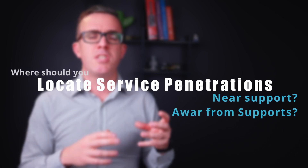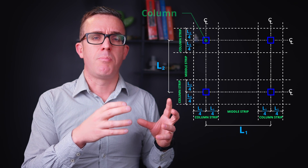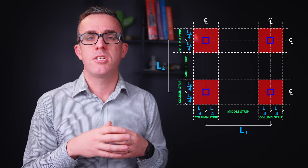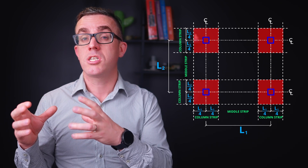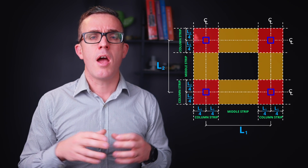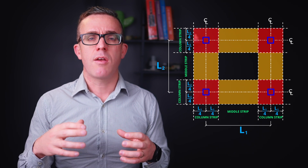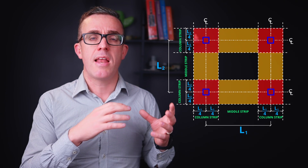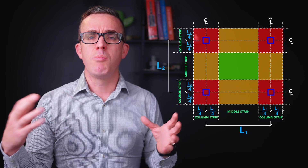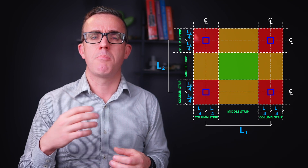Locating penetrations early on can achieve efficiencies in your concrete slab designs. A traffic light system helps locate penetrations in the most efficient positions. Red zones are near the supports — avoid penetrations here as they can affect the punching shear zone, potentially requiring additional punching shear reinforcement or additional support structures. Orange zones are the column strip — still a support line, so minimize penetrations here as they may adversely affect the support structure. Green zones are in the middle strip — you can have as large a penetration as needed here with minimal adverse effect on your structural design. Providing this system to the architect allows them to locate penetrations efficiently, especially early in the design process.